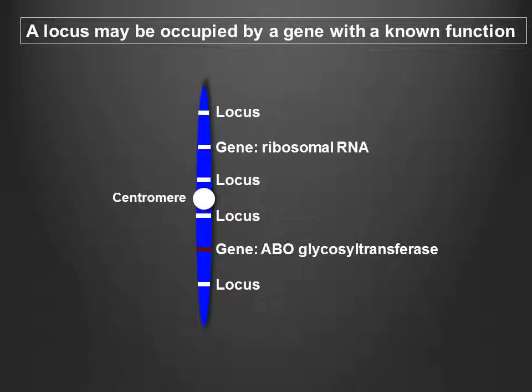For example, two loci on this chromosome are occupied by genes. One gene produces ribosomal RNA, the enzymatic component of ribosomes. The second gene produces a protein, the ABO glycosyl transferase enzyme, which determines the ABO blood group in humans.